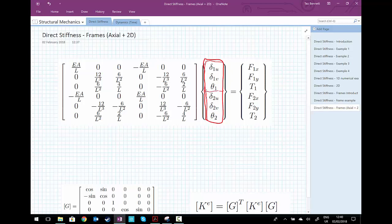then we've got the same degrees of freedom at the right hand side of the bar and the complementary forces are f1x which is in the direction of the bar, f1y which is transverse to the bar, and moment t1 acting on theta 1.